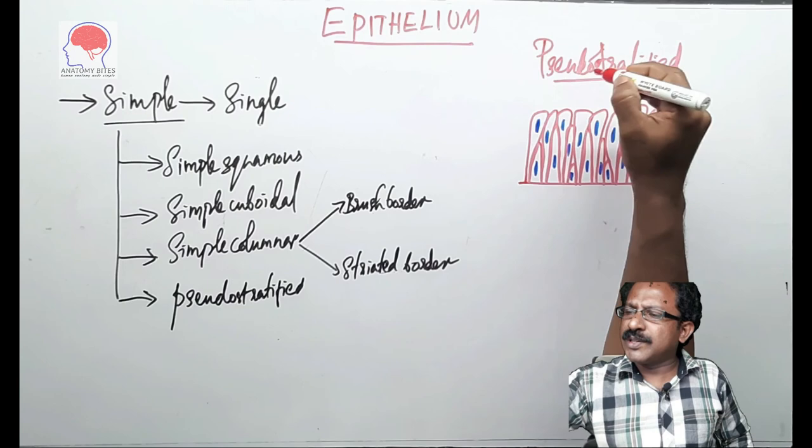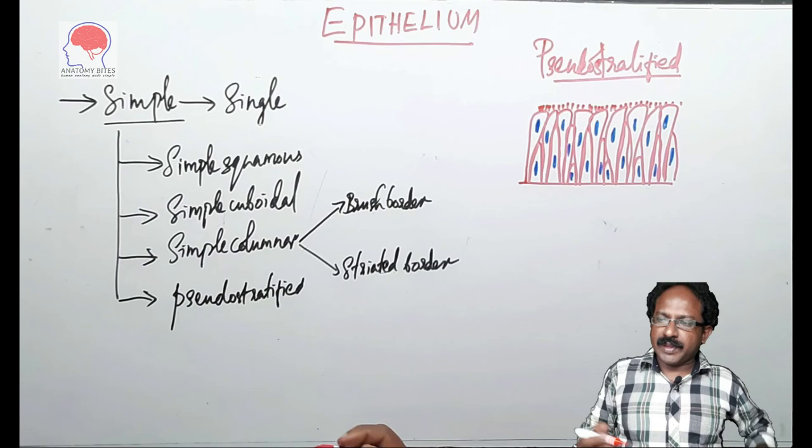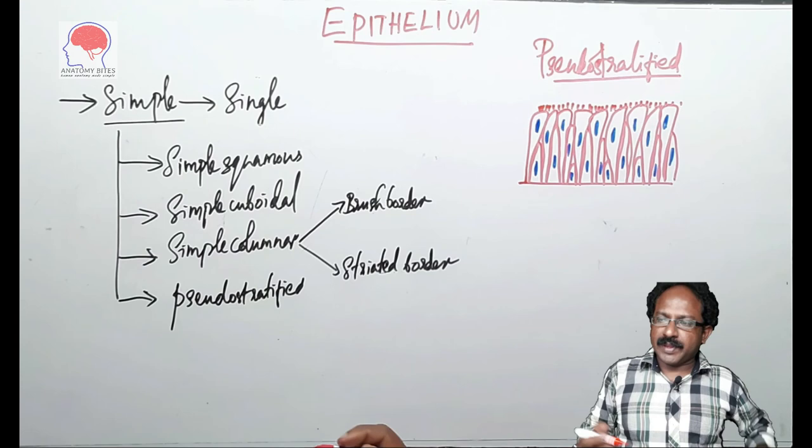Mostly the pseudostratified epithelium will be with surface modification of cilia. And the typical example of this is trachea. This is all about this simple epithelium.